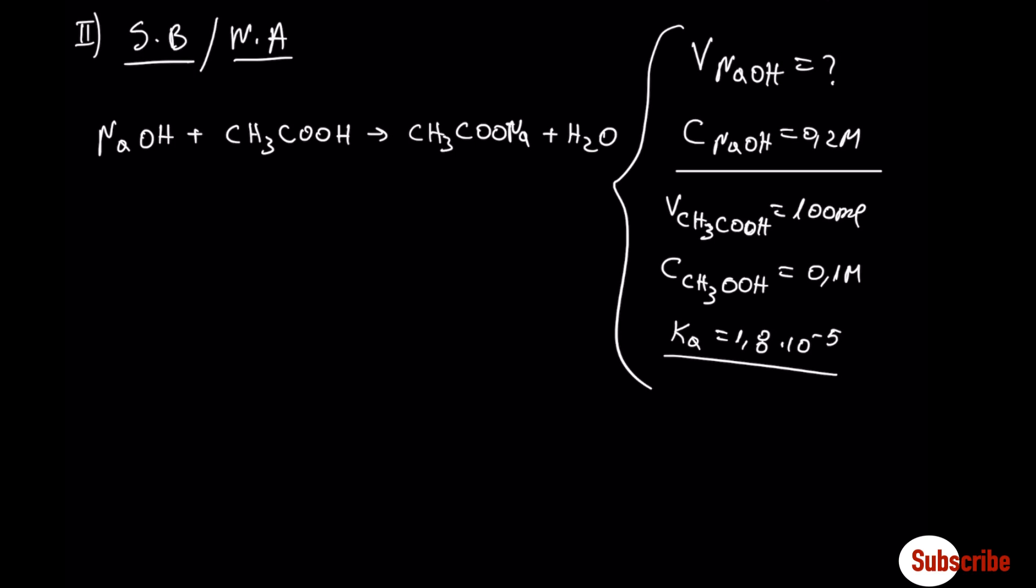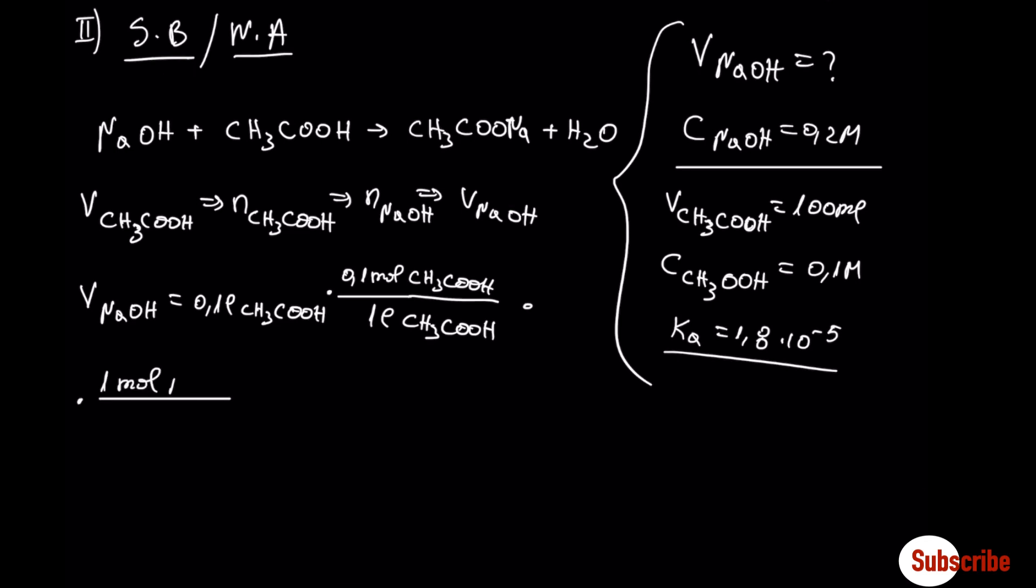Let's find the volume of sodium hydroxide to neutralize the weak acid. The procedure is the same as with the previous example. We have to use the conversion factors. As you may see, it is the same as before.